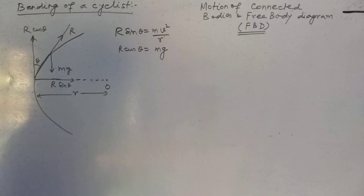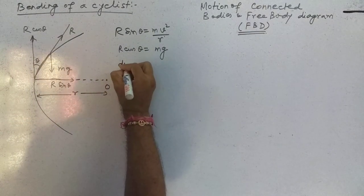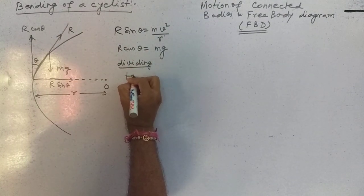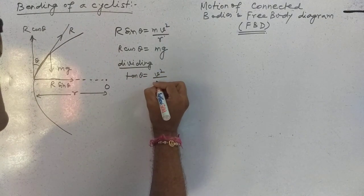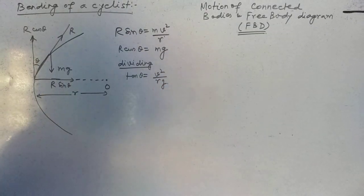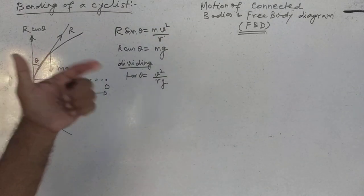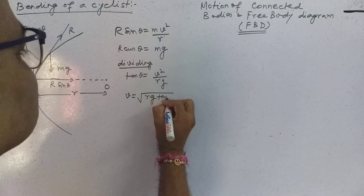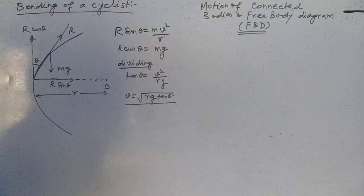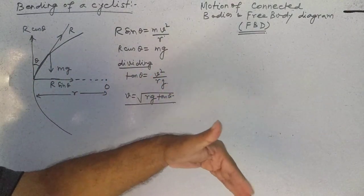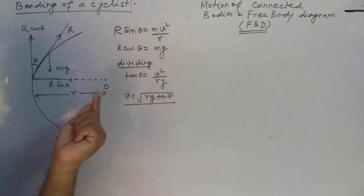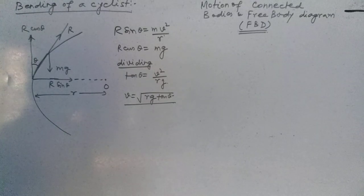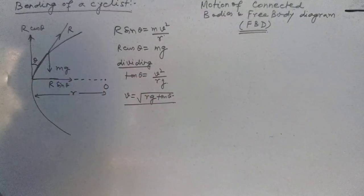On dividing — a very simple case — we get: tan θ = v² / (r·g). From this you can find the angle of leaning. Alternatively, v = √(r·g·tan θ). For safely turning along a curved path, the required speed is v = √(r·g·tan θ). This is all about the bending of the cyclist.